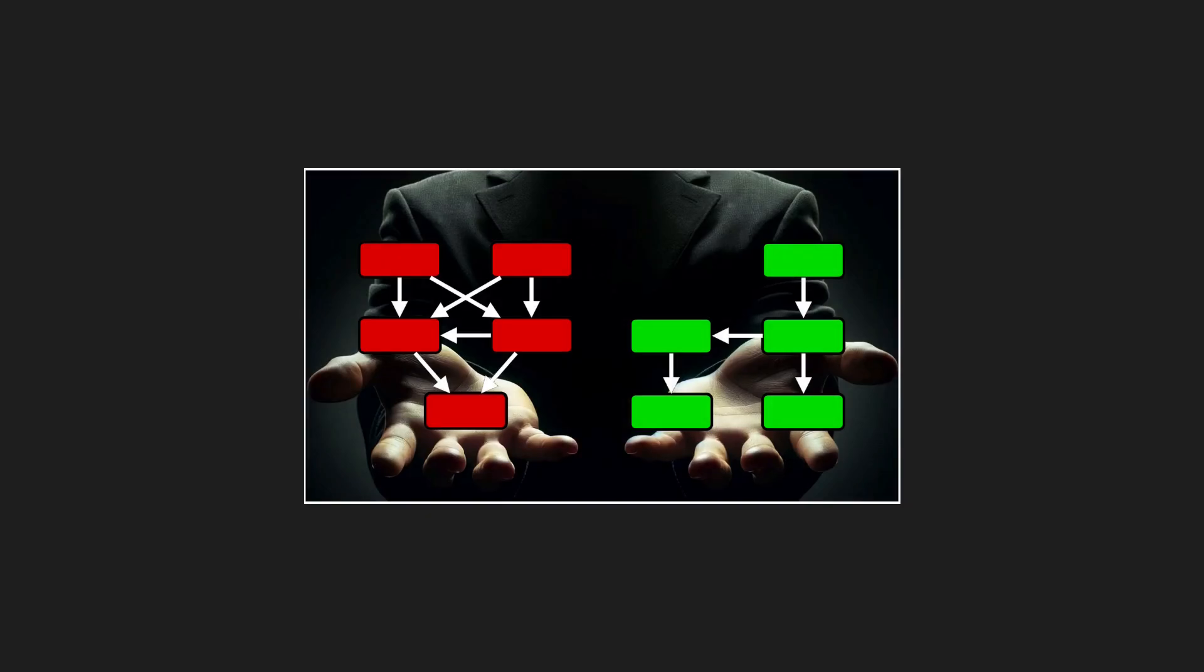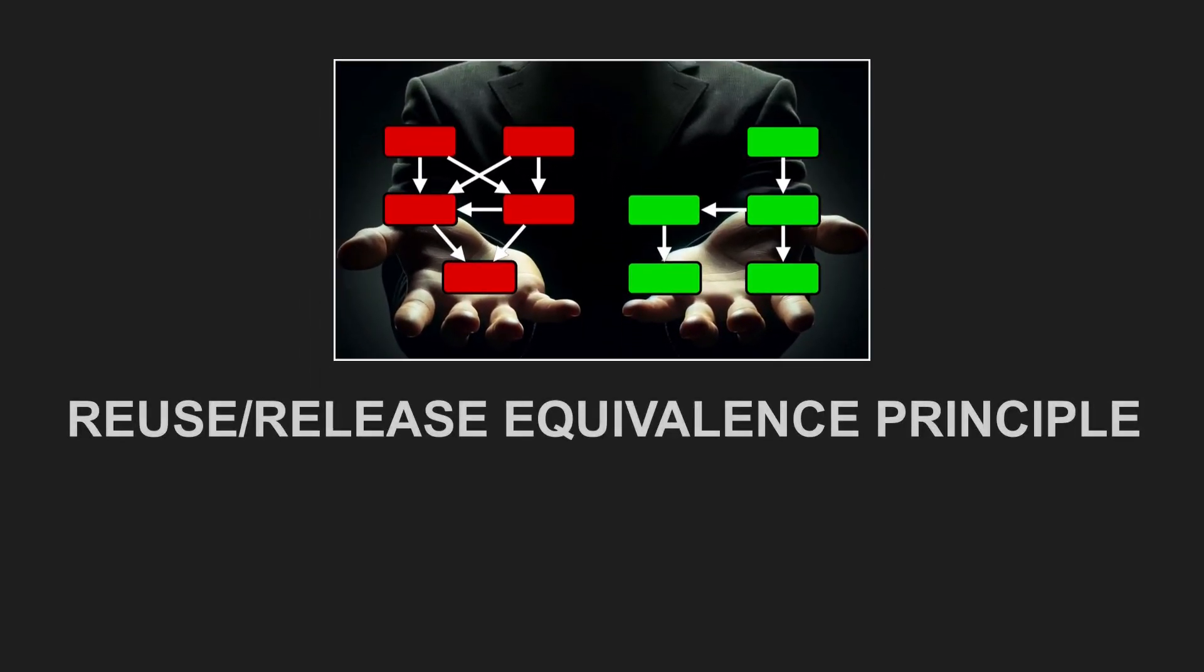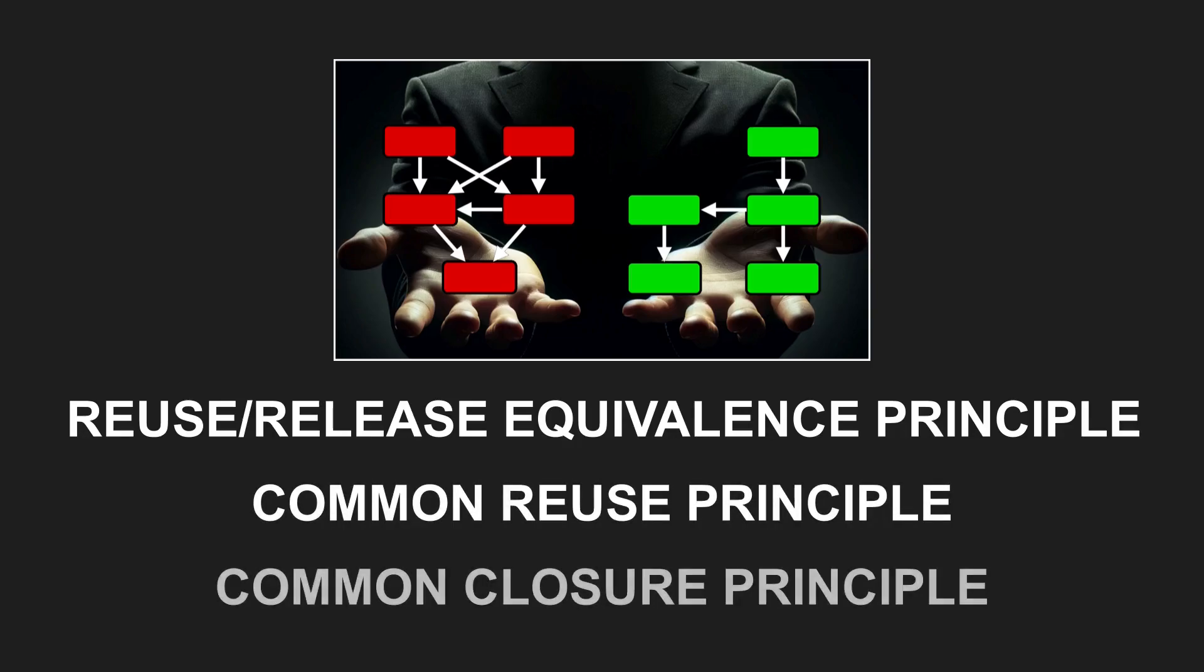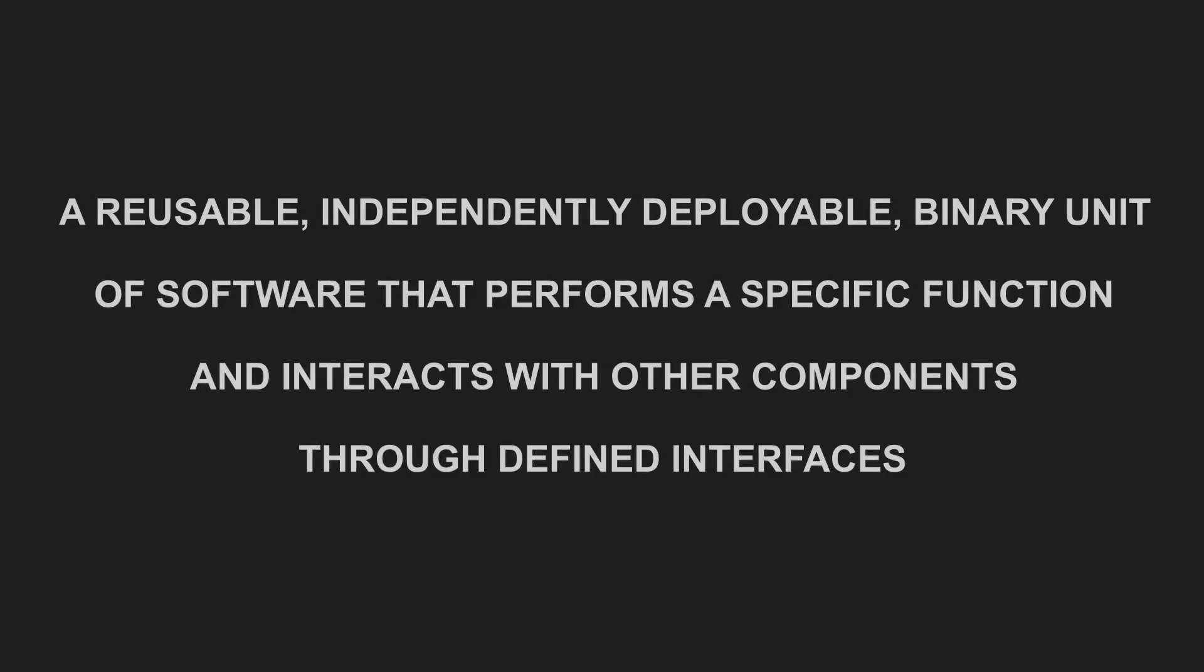In the first part of our series on the principles of component design, we explored the reuse-release equivalence principle, the common reuse principle, and the common closure principle, which guide us on how to effectively partition our classes into components. In this context, we defined a component as a reusable, independently deployable binary unit of software that performs a specific function and interacts with other components through defined interfaces.